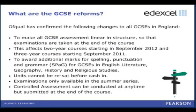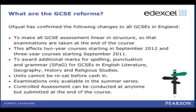What are the GCSE reforms? The first and most crucial point is to make all GCSE assessment linear in structure so that the examinations are taken at the end of the course. At the moment GCSEs are currently unitised or modular, meaning students can do a unit in listening or reading in year 10 and then do additional units in year 11. With the new linear structure, all exams will take place at the end of the GCSE course.